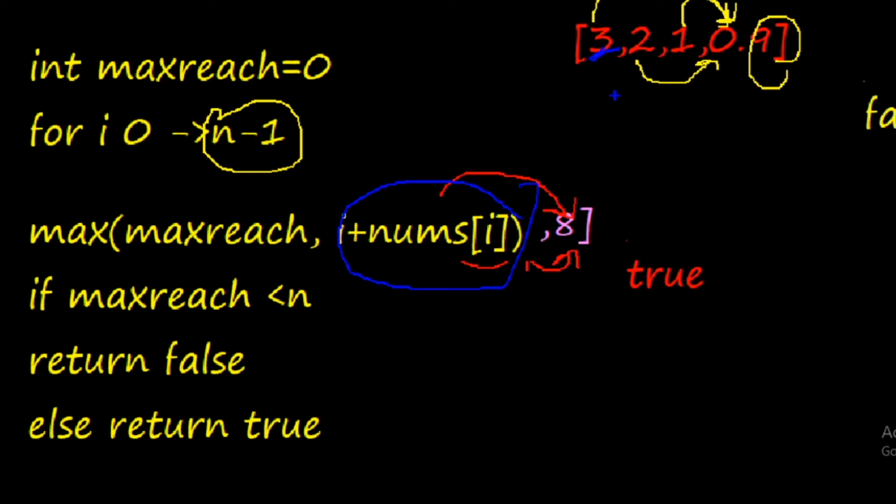Like if we are at index one, how much length can we go? We can go from i to i plus the element value. So if we're at index one, that is zero plus the element which is three. So one, zero, one, two, three - we can go up to three. If we are at the first element, where we can go? We can go from one plus two.